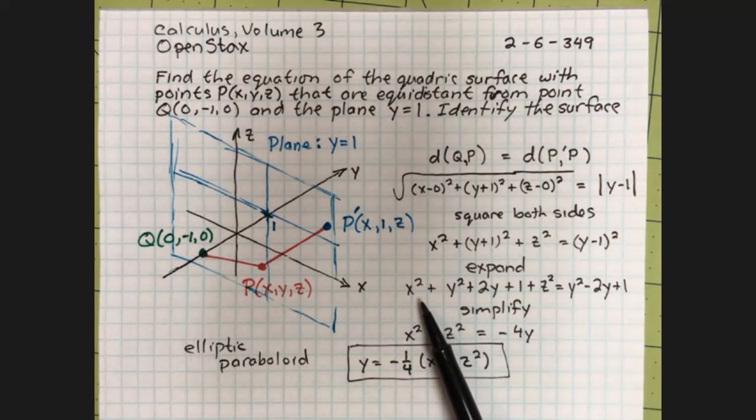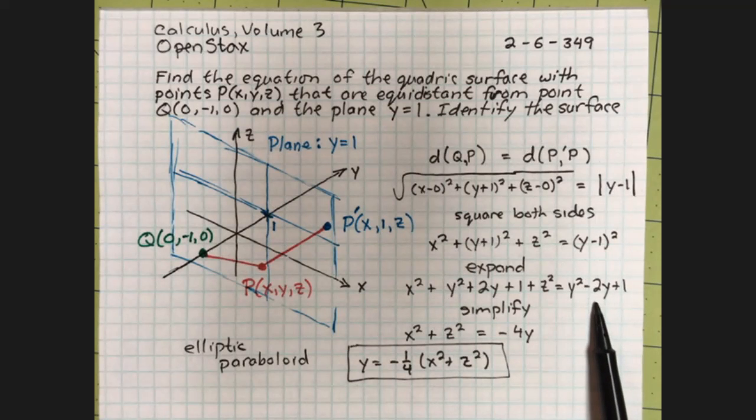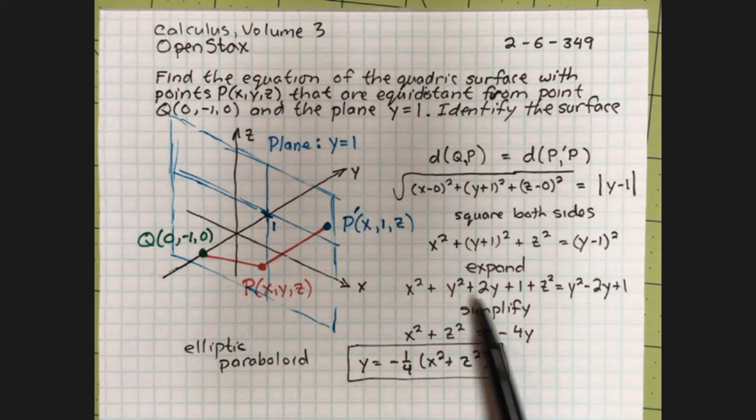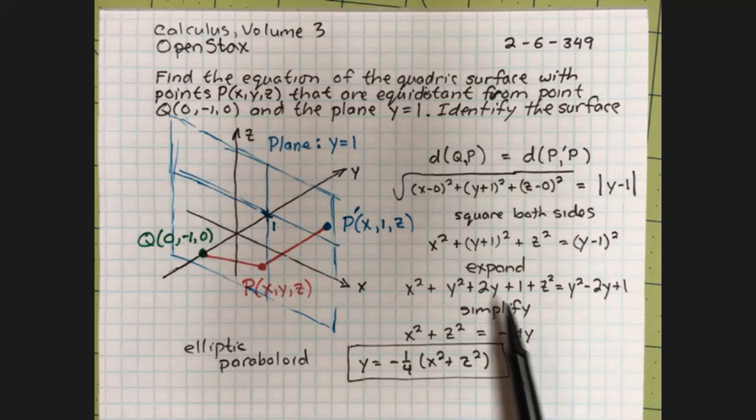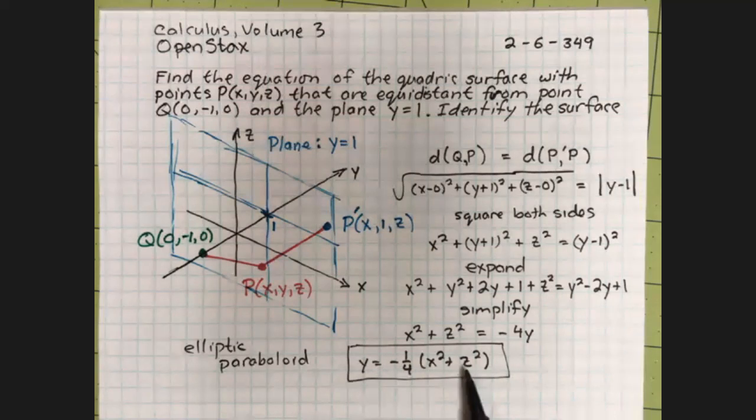We expand the (Y + 1) quantity squared, the (Y - 1) quantity squared. We simplify by subtracting Y squared from both sides and by subtracting 1 from both sides. And now I'm left with X squared plus Z squared equals -4Y. Or Y equals -1/4(X squared plus Z squared).